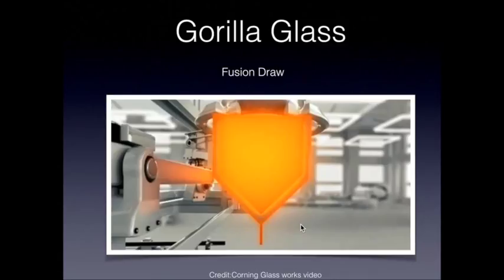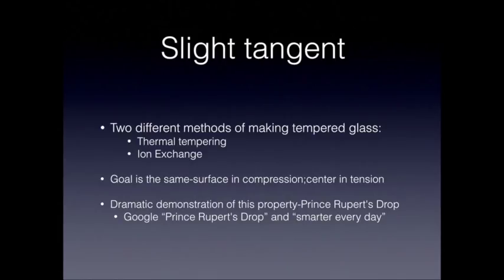The process includes grabbing that sheet and pulling it. By pulling it at a particular rate — faster or slower — you can make the sheet either thinner or thicker as it cools. So the combination of the proper temperature, proper flow rate, and how quickly or slowly you pull that molten sheet allows you to create a thinner or thicker sheet of glass.